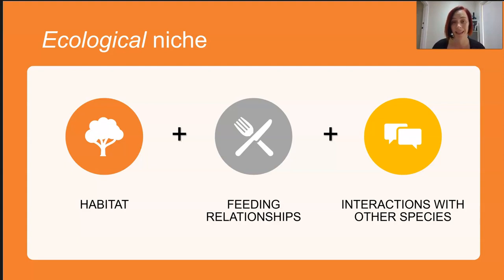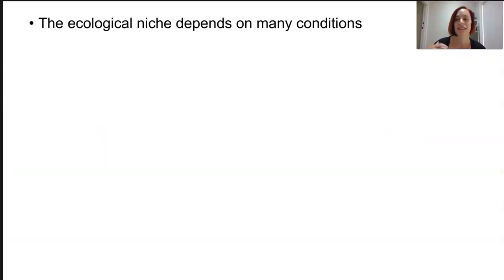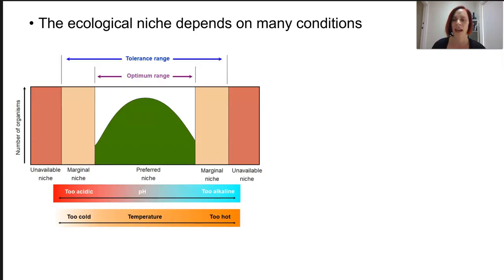An ecological niche will obviously depend on all the conditions that are available. There's a bit of flexibility for some organisms with regard to tolerance ranges, but outside of that range survival may not be possible. This may be in relation to sunlight, how intense the light is, the pH, the salinity of the soil or the water or the temperature.